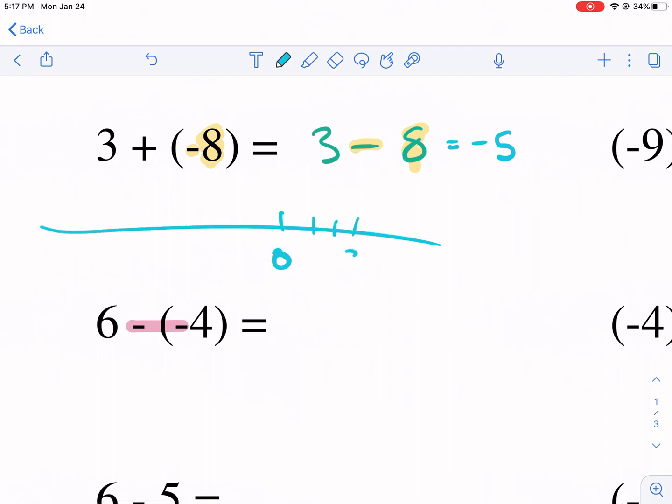Number line, we start at zero, one, two, three, there's zero, there's three. And we go in the eight direction, one, two, three, four, five, six, seven, eight. We're going to land on negative five. That's how that one works.